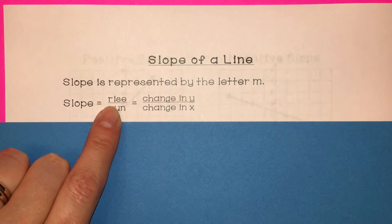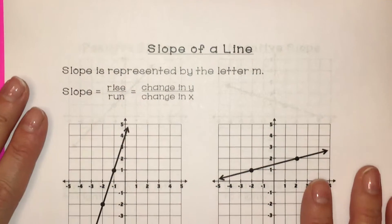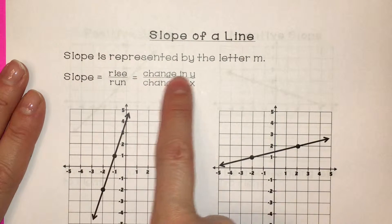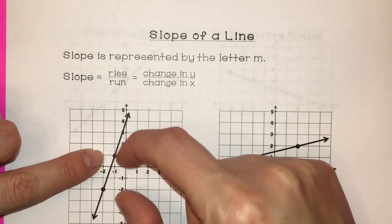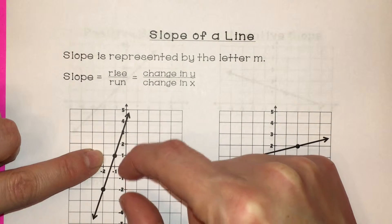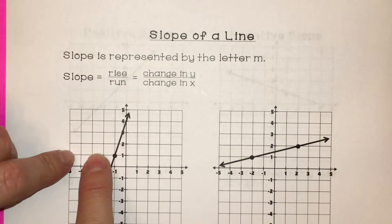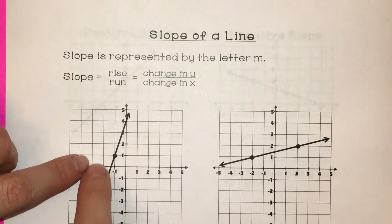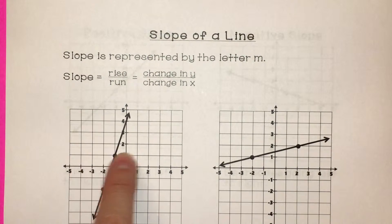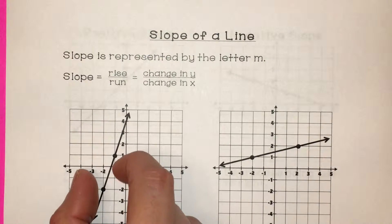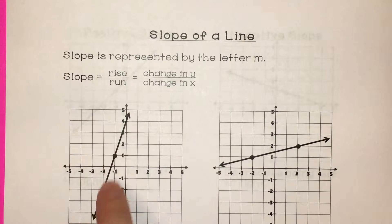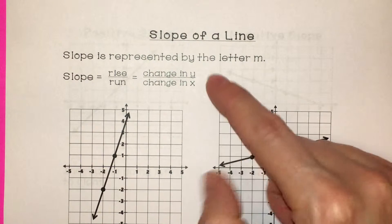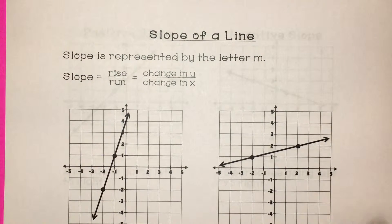The rise would represent how much we change in the y value, because if you rise, you're looking at the difference or the change in your y value. A run would be going left to right or right to left — across — and that would be the change in the x values, because if you go that direction, it's a movement along the x axis. So rise over run is the same thing as the change in the y value over the change in the x value, and that gives us the slope of our line.